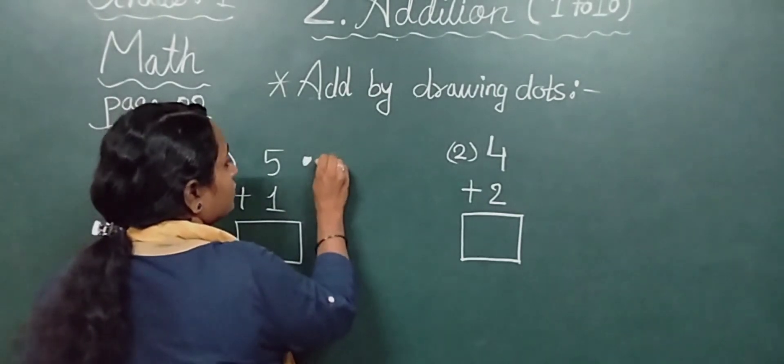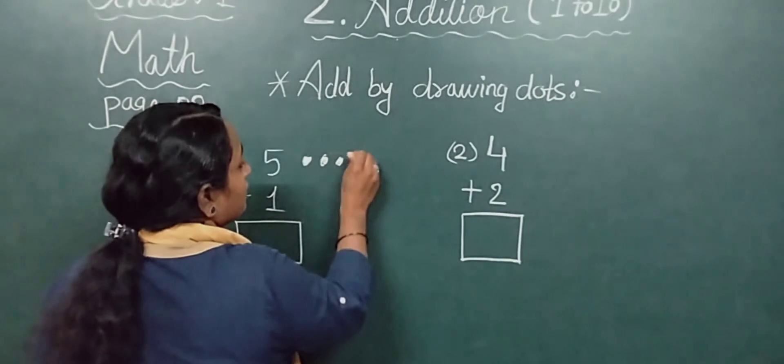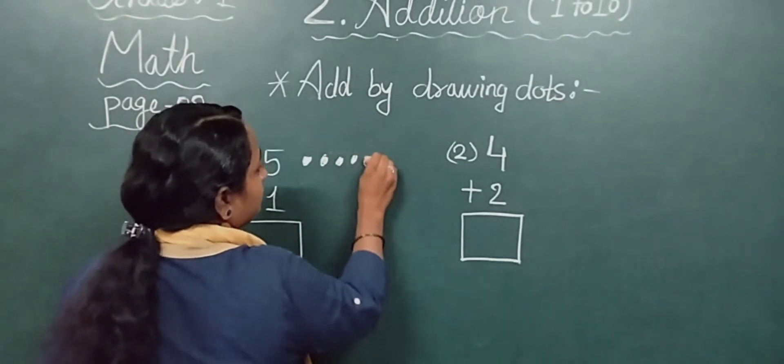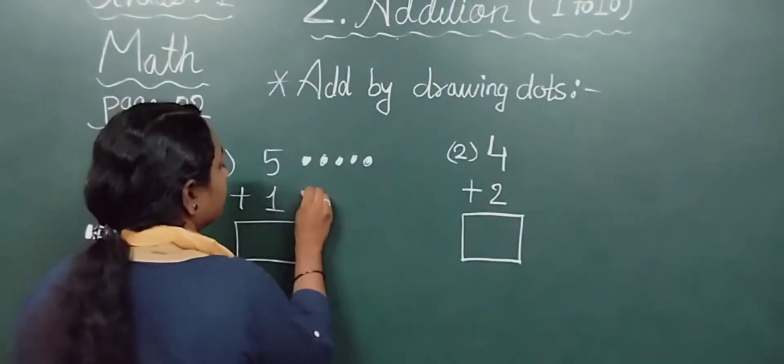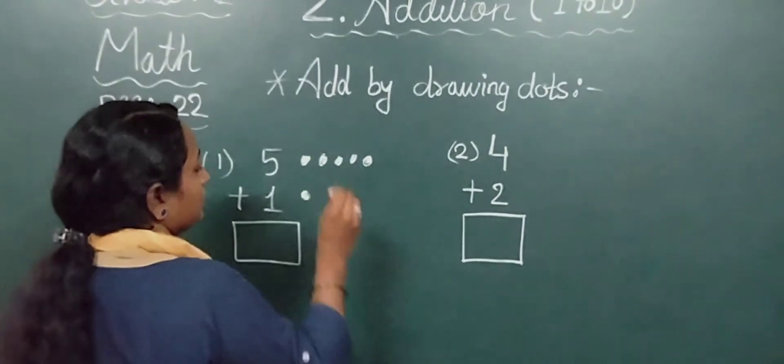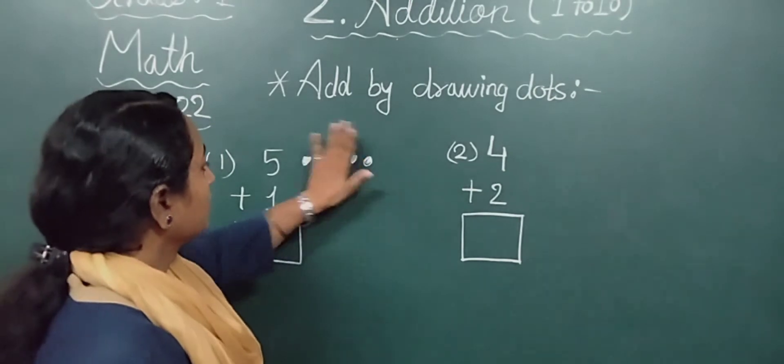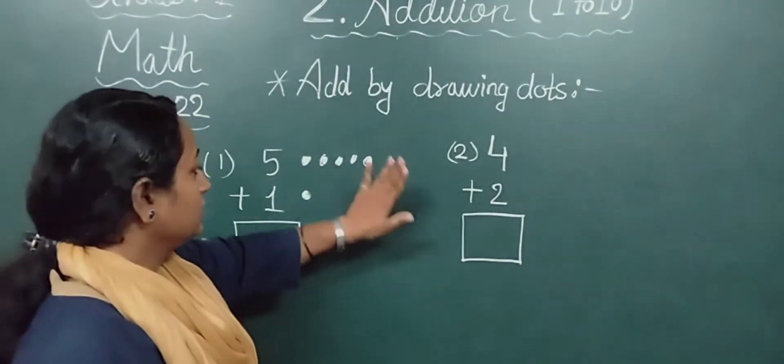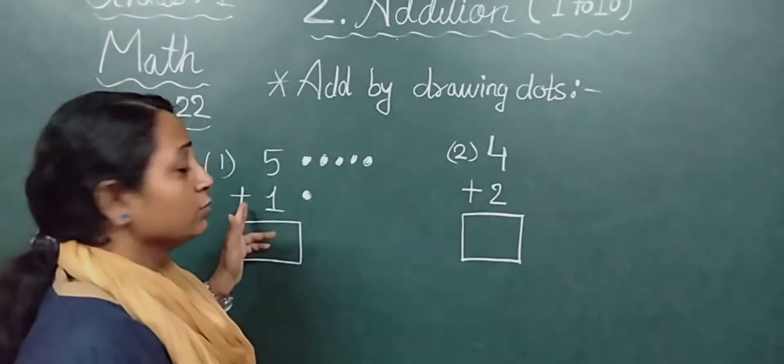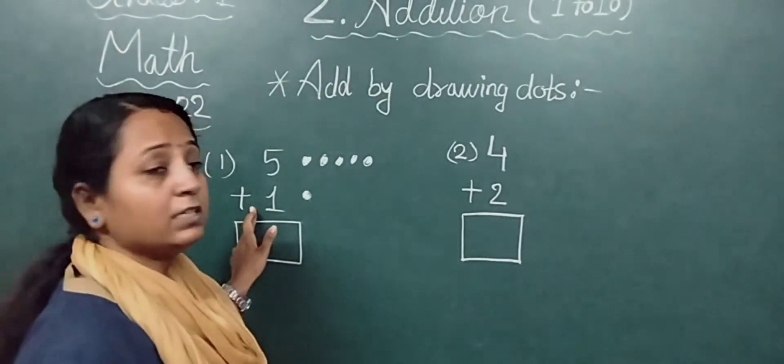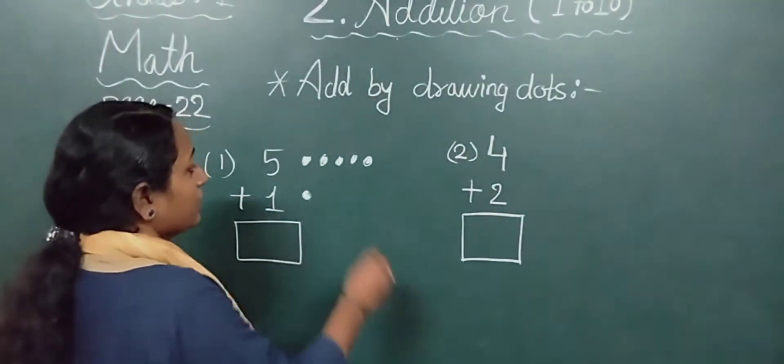Here is 1, so we will make only 1 dot. Now what do we have to do? We have to count the total. We will count all the dots we made. There is a plus sign here, so we will add.